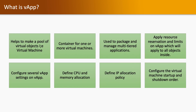What is VApp? VApp is a kind of container which can have multiple resource pools, and inside each resource pool we can have multiple virtual machines. VApp helps to make a pool of virtual objects such as virtual machines and is used to package and manage multi-tiered applications. It applies resource reservation and limit on the VApp, which applies to all objects inside. You can configure CPU and memory limit and reservation on the VApp, and it also has an option for IP allocation policy to automatically assign IP addresses to virtual machines.